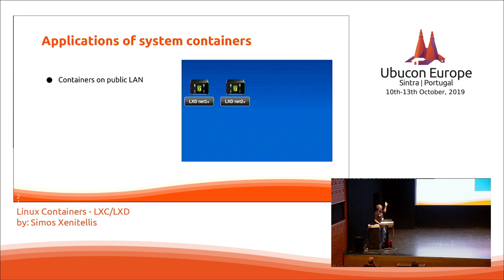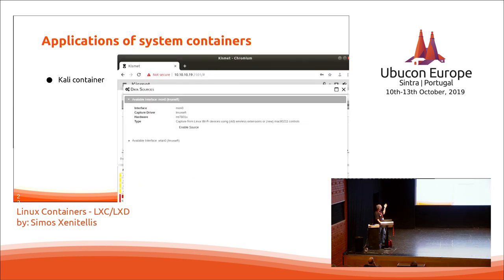You can have something called MacVLAN, where two or three containers show up on your LAN as individual different computers, but they are actually containers. Here is an example using the Kali container running Kismet for wireless scanning inside an LXD container. It takes the network device from a USB adapter, moves it from the host into the container — the host cannot see it anymore. It is fully controlled by the container.